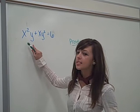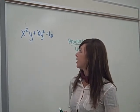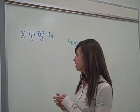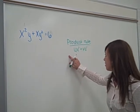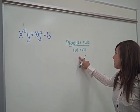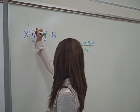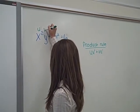Now we're going to take the derivative of x squared y plus xy squared equals 6. To do this, we need to use the product rule, which is uv' plus vu'. So we're going to take, if this is u and this is v,